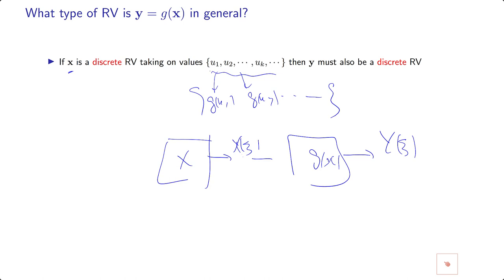The cardinal number, the number of elements here, is always greater or equal, because sometimes two of these may be mapped to one. So the number of elements in {U1, U2, ...} is always greater than or equal to the number of elements of {G(U1), G(U2), ...}. This notation means cardinal number. Therefore, I conclude that Y must also be a discrete type random variable.